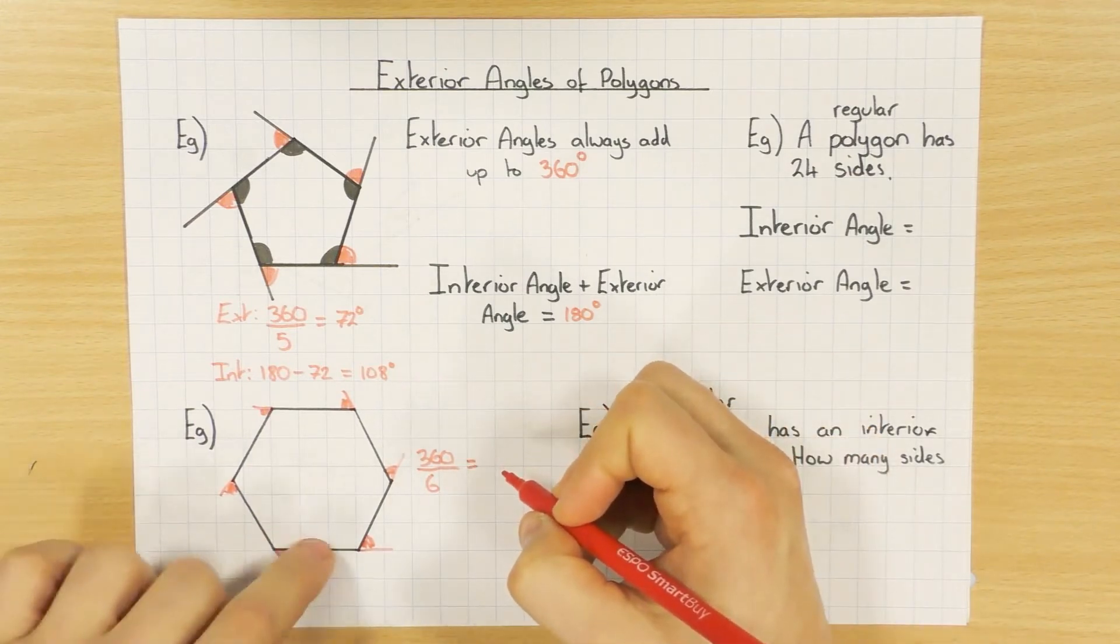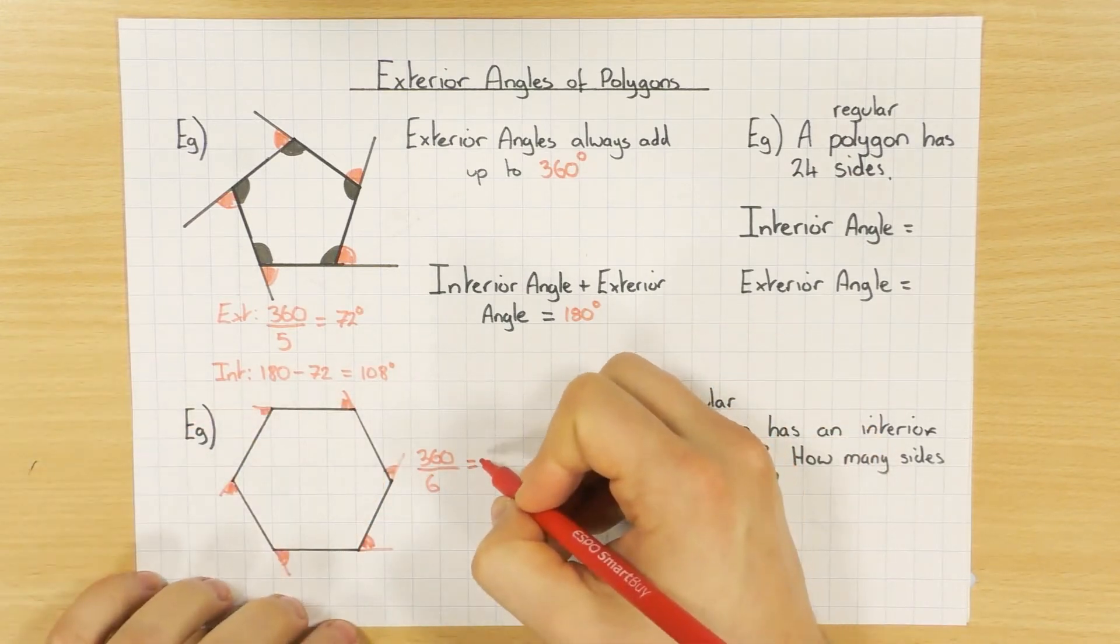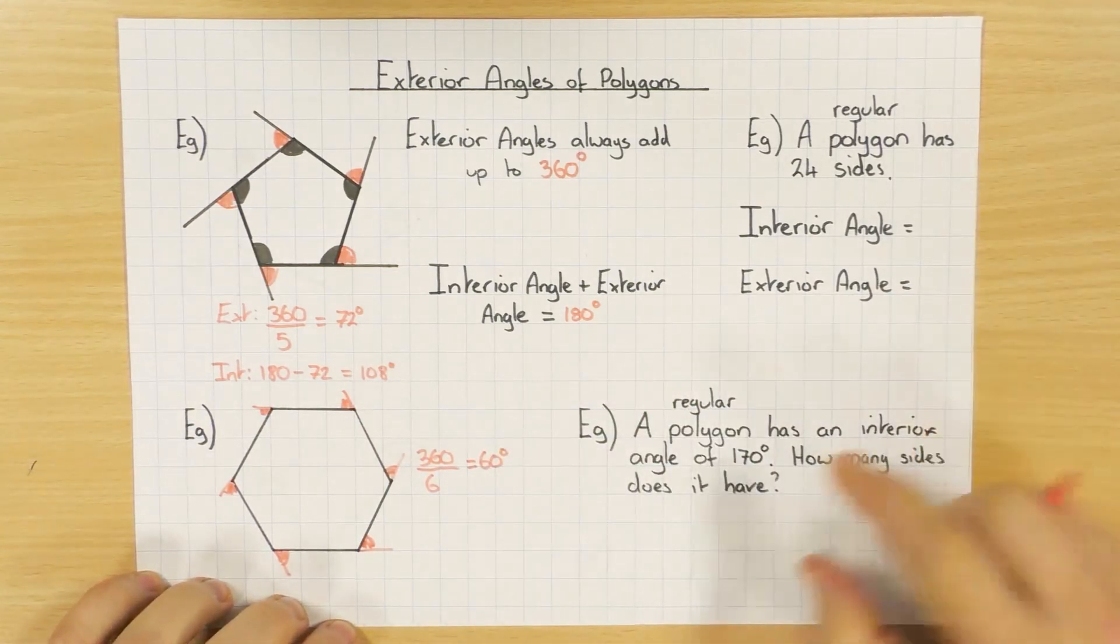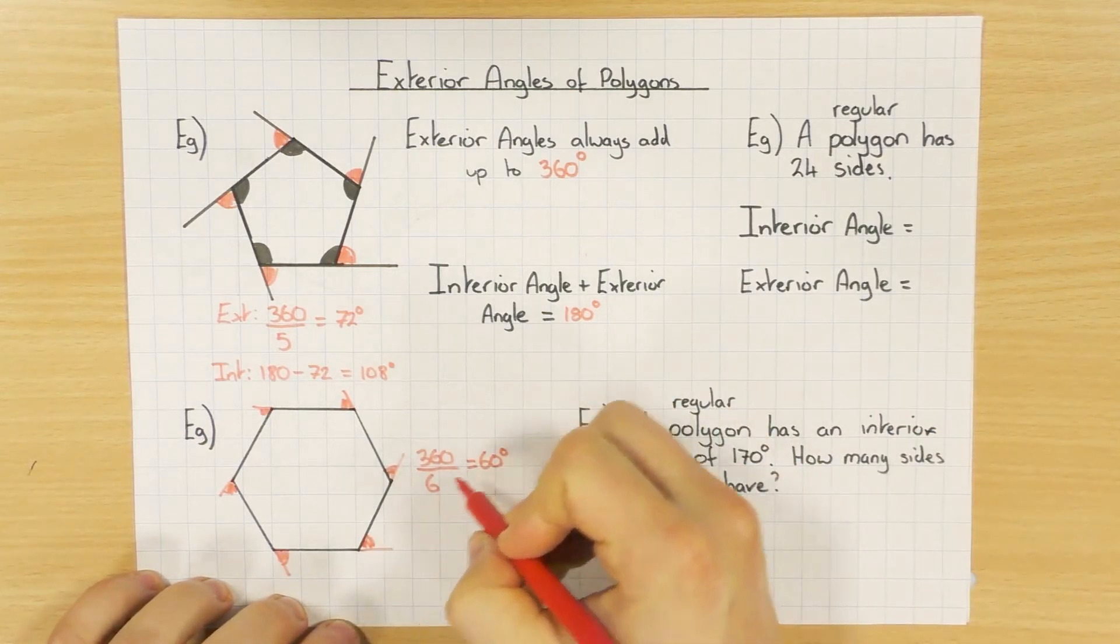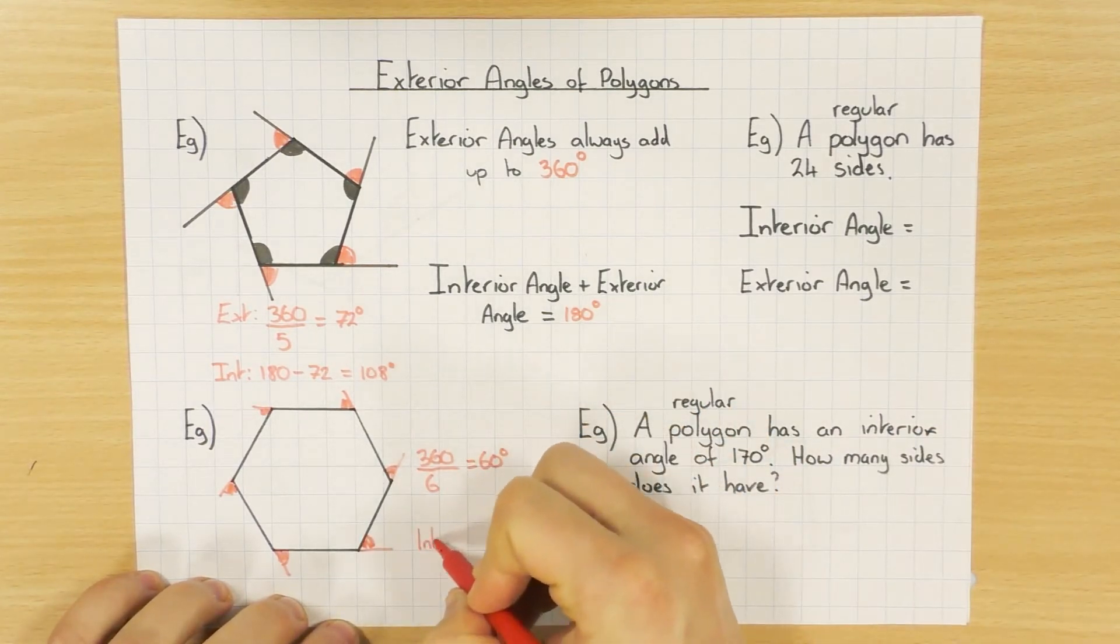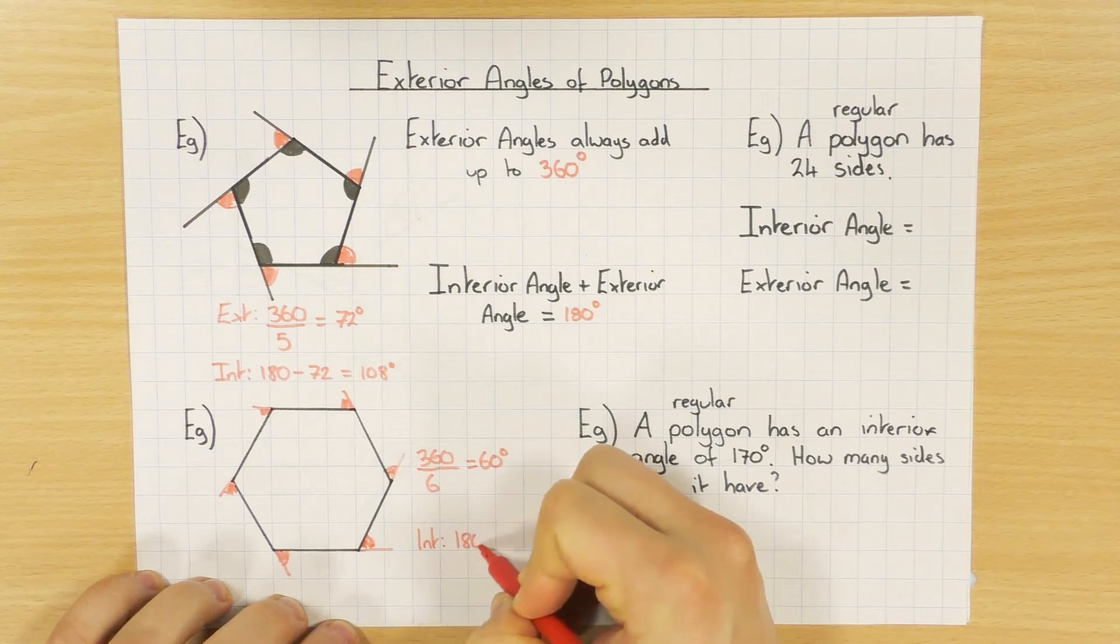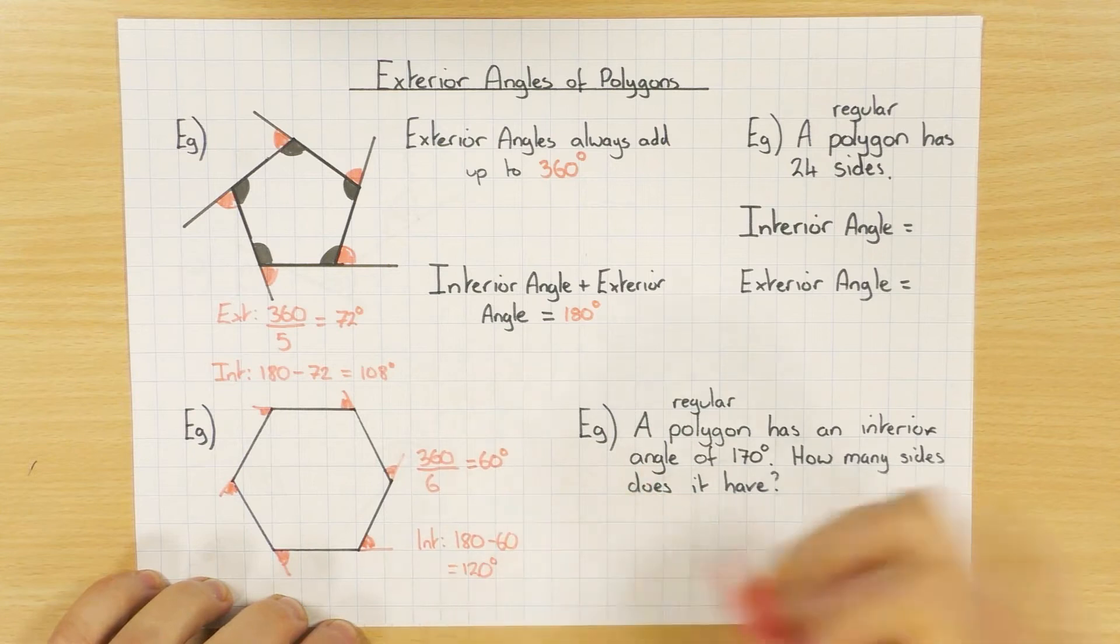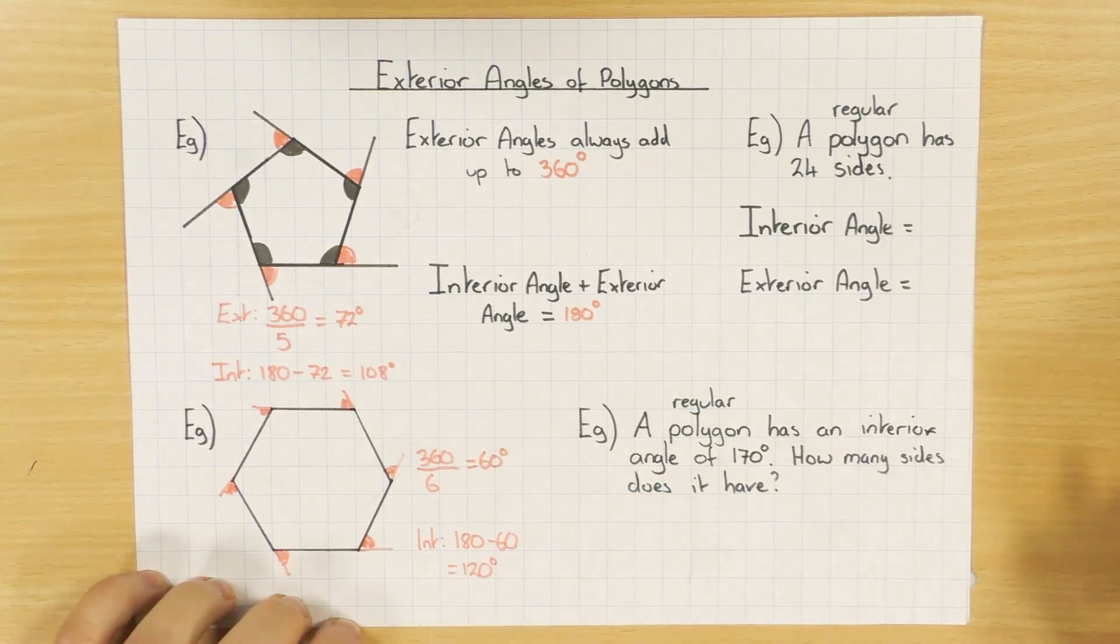Which will obviously give me 60 degrees. So again, if I wanted to work out the interior angle, that's the exterior one. If I wanted to work out the interior one, I would just do 180 minus the exterior to get the interior to be 120 degrees.